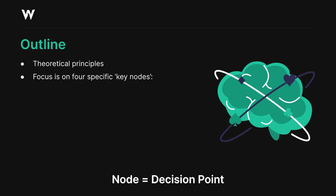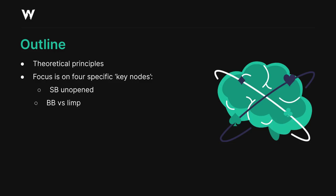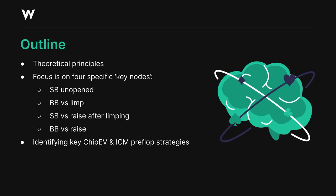The four nodes are: the initial node where action folds around to the small blind; the node where the small blind limps and the action is on the big blind; the subsequent node where the small blind limps and the big blind raises; and finally the node where the small blind raises and the big blind is defending. At each node we're going to look at the primary strategies in chip EV terms.